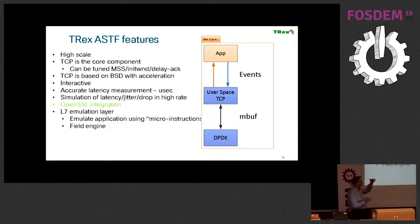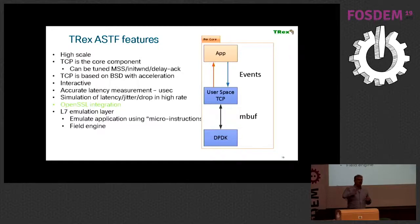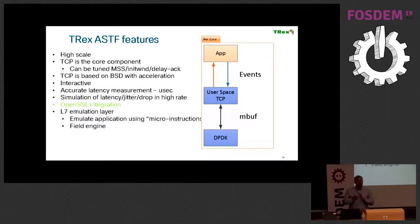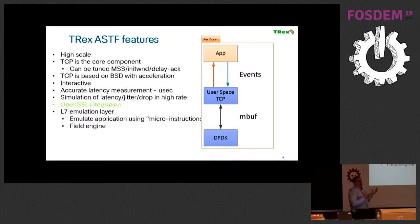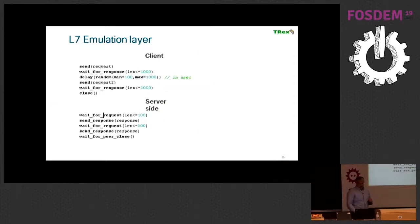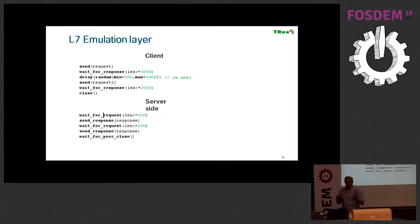There is a layer of emulation of application on top of a TCP stack, on top of DPDK, and everything is event-driven. Every core has an event-driven loop, no threads, nothing, no locks, no interaction between them. It's only messaging between the cores. By that, we can reach really high scale. This is an example for the emulation layer. The client, for example, does a request, then waits for the response, can do a delay of random, then send another request, wait for response, and close. The server side does the opposite. You wait for the request, send a response, and so forth. This is just the low-level microcode that we have in the emulation layer.